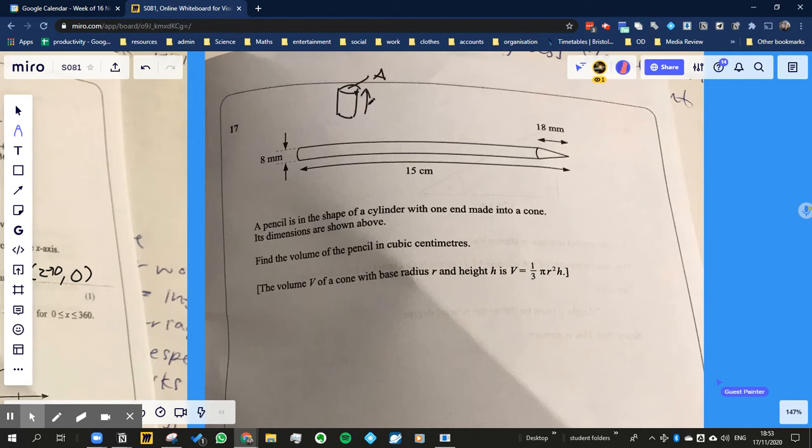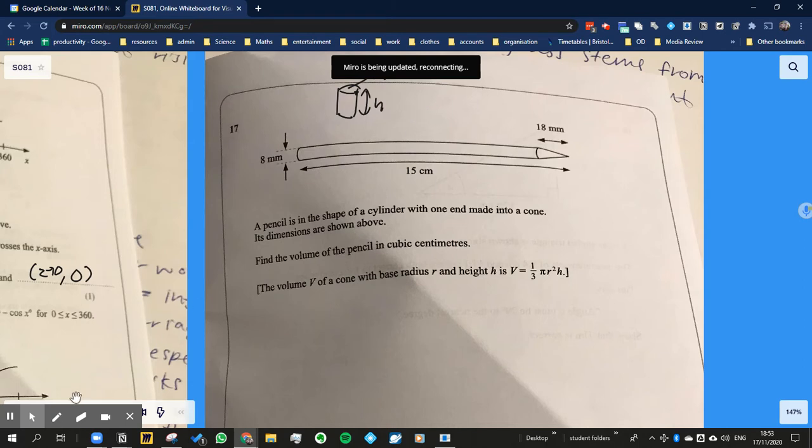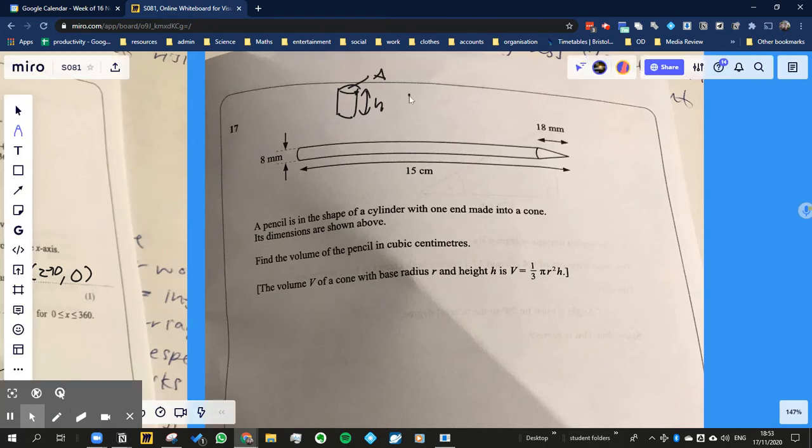So the volume is going to be equal to the area times the height. Now the area of the circle at the top of the cylinder is obviously πr², so the volume of a cylinder is going to be πr²h.